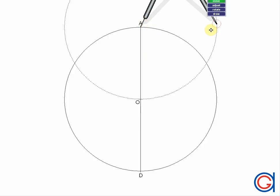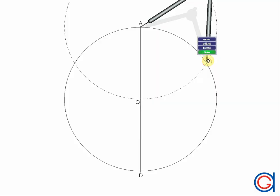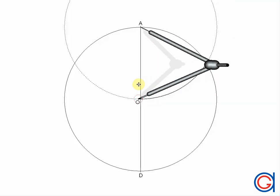So the next step, with our compass set to the length of the radius of the circle and centered on point A, we scribe an arc which cuts the circle at two points, as can be seen here in the video.